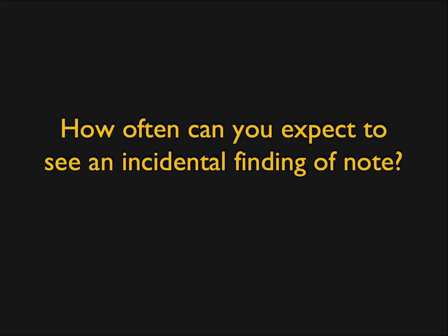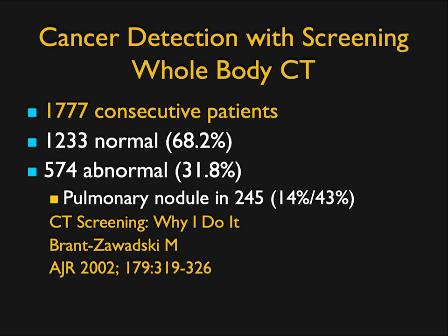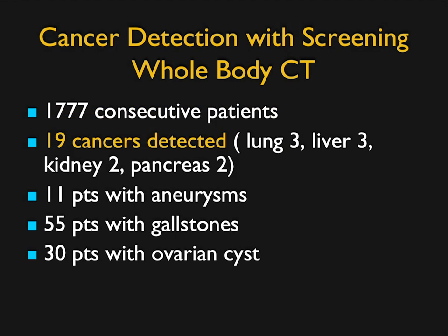How often can you expect to see an incidental finding? There are different ways to think about it. Looking at Brad Zawoski's article on whole-body screening of well patients, a third had abnormal findings. Some findings may not be that important, but 19 cancers were detected, along with aneurysms and ovarian cysts. Even in a theoretically normal population, you are going to find important findings — and it depends on what studies you're doing.